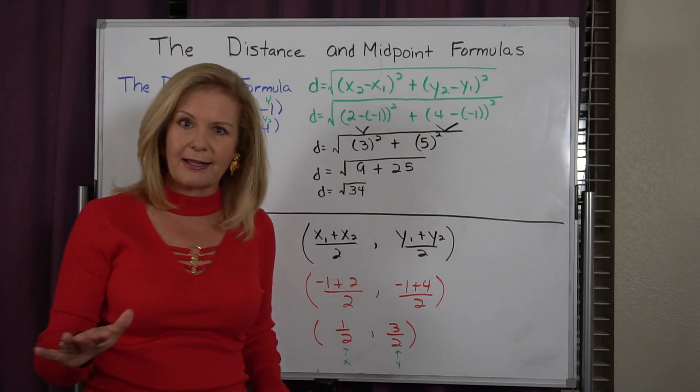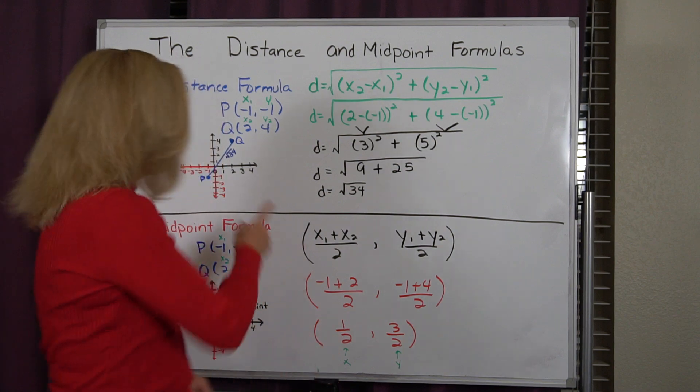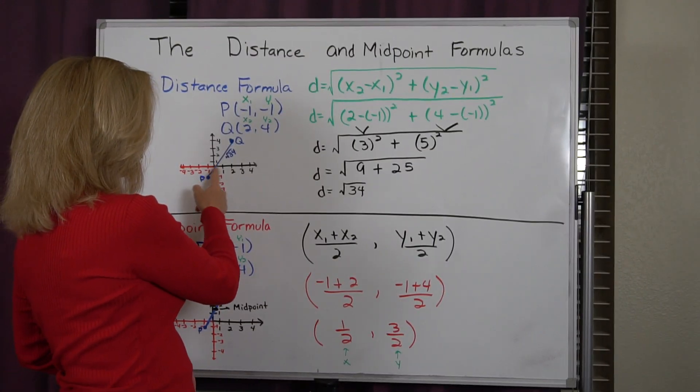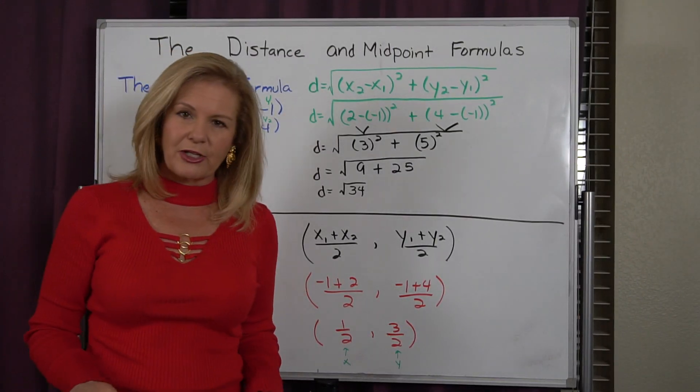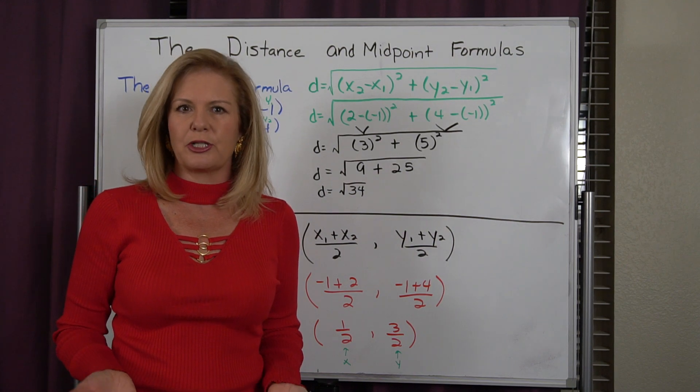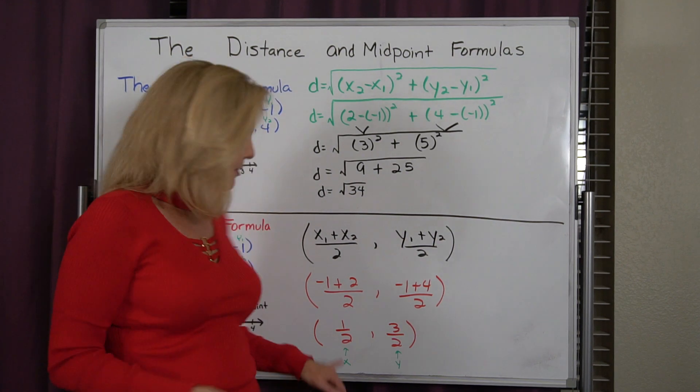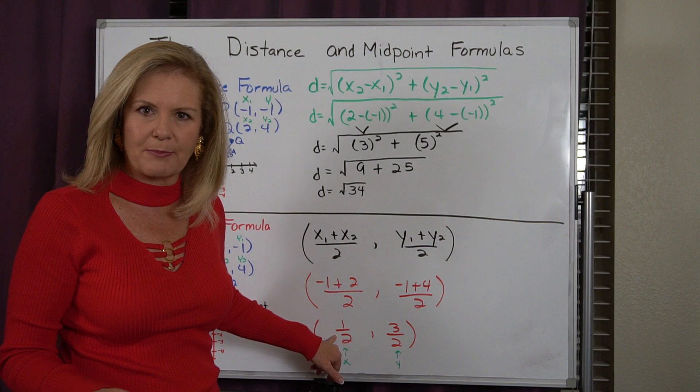Now, you can leave it like this, because I know what 1/2 looks like. I could just come over to a halfway between 0 and 1. If you want to change it to a decimal, you could. You could change it to 0.5. But this is perfectly acceptable.